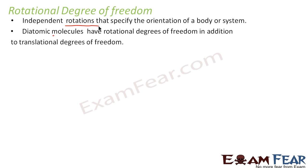This rotational degree of freedom happens only in the case of diatomic molecules; it is not possible for monoatomic. That's because in diatomic molecules there are two atoms connected through a bond, so a rotation is possible of one atom with respect to the other. Diatomic molecules have translational degrees of freedom because the entire molecule can move from one point to another as a whole, and in addition to that, they have rotational degrees of freedom.